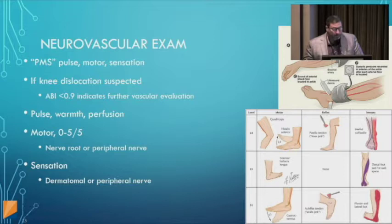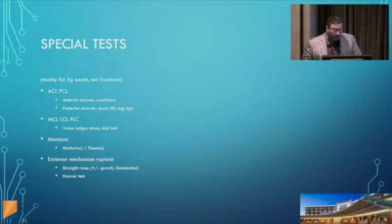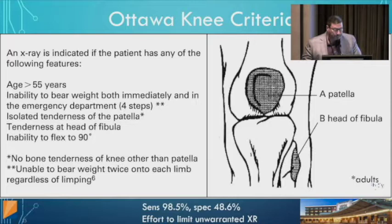Perform a thorough neurovascular exam — just asking a patient to wiggle their toes is not a neurovascular examination. Check all dermatomes and muscle groups. With fractures around the knee, you can also get an extensor mechanism rupture — tearing of the quadriceps tendon off the patella, or tearing of the patellar tendon off the patella or tibial tubercle. If the patient cannot do a straight leg raise, one must be concerned with disruption of the extensor mechanism.